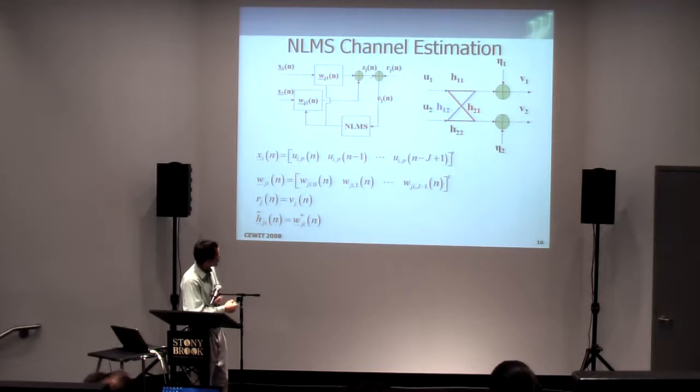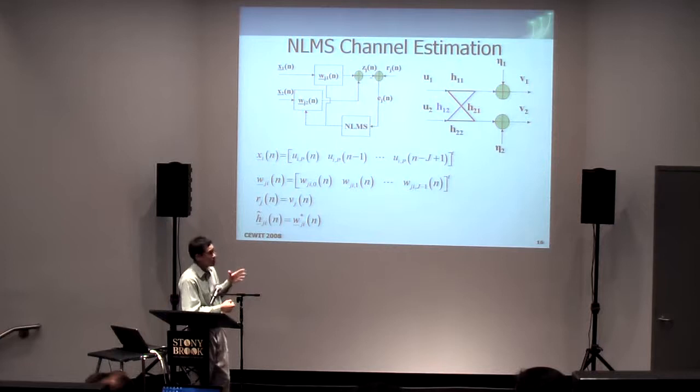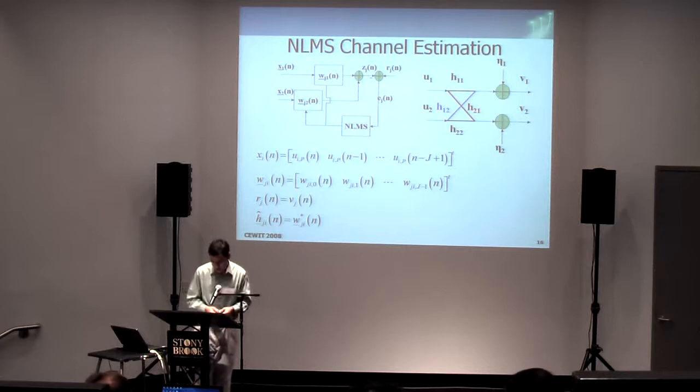So here, if you look at the diagram, U1 convolved with H11 plus U2 convolved with H12 plus the noise V1. So we use this adaptive filters to kind of approximate or estimate H11 and H12 for that example. So that's the basic idea behind this.